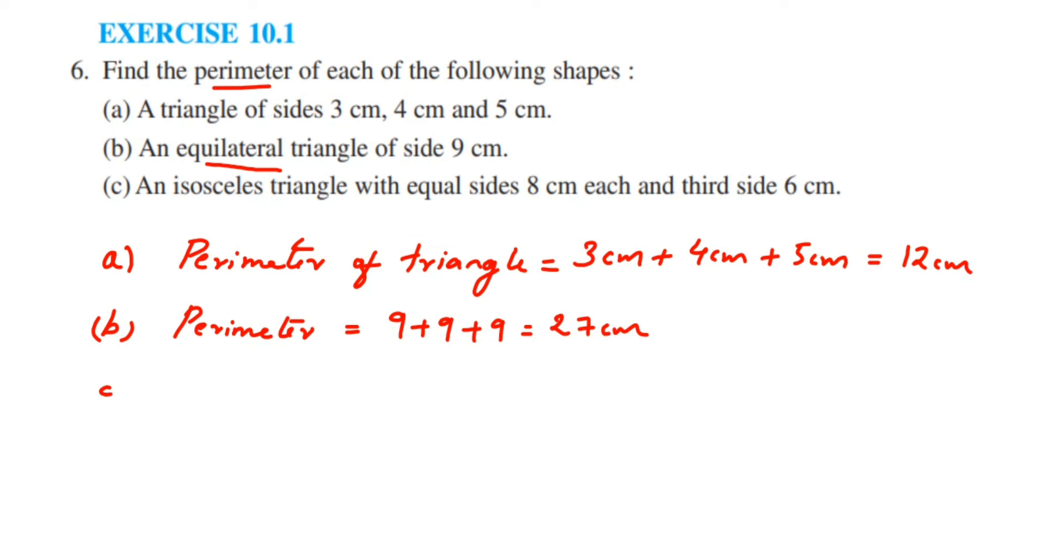Now for the last one, it is an isosceles triangle, where equal sides are 8 cm and third side is 6 cm. In isosceles triangle, we know that two sides will be same and the third side will be different. If this is 8, then this will also be 8 and the third side is 6. So perimeter will be 8 plus 8 plus 6, which is equal to 22 cm.